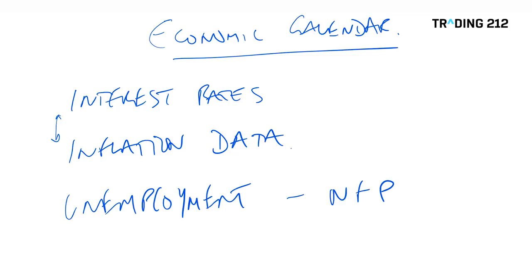We get regular updates about the state of employment in the various major economic zones. The big one here is the US monthly unemployment data — you've probably heard of it, it's the non-farm payrolls. Every month, typically the first Friday of the month but sometimes it shifts to the second Friday, it comes out at 1.30 UK time. It's how many jobs were added or lost in the US economy in the previous month. And because the US economy is so important to the global economy, the state of employment in the US can cause quite a lot of volatility short term after this announcement comes out.